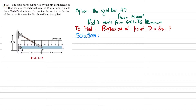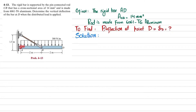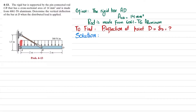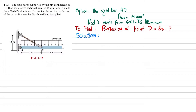Welcome back, problem 4-13. The statement is: the rigid bar is supported by a pin-connected rod CB, which has a cross-sectional area of 14 square millimeters and is made of 6061-T6 aluminum. Determine the vertical deflection of the bar at D when the distributed load is applied. This bar AD is supported by the pin-connected rod, and due to this load, the beam will deflect.